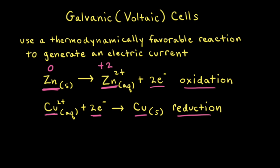The other way to tell that this is the reduction half reaction is to look at the oxidation numbers. The copper two plus cation has an oxidation number of plus two, and solid copper has an oxidation number of zero. Since there's a decrease or a reduction in the oxidation number from plus two to zero, this is the reduction half reaction.